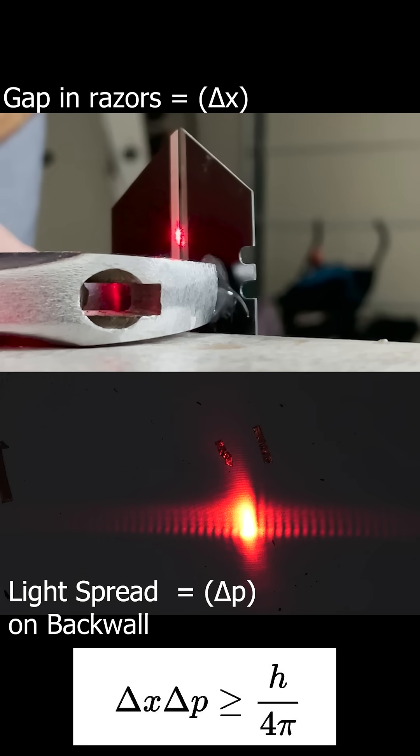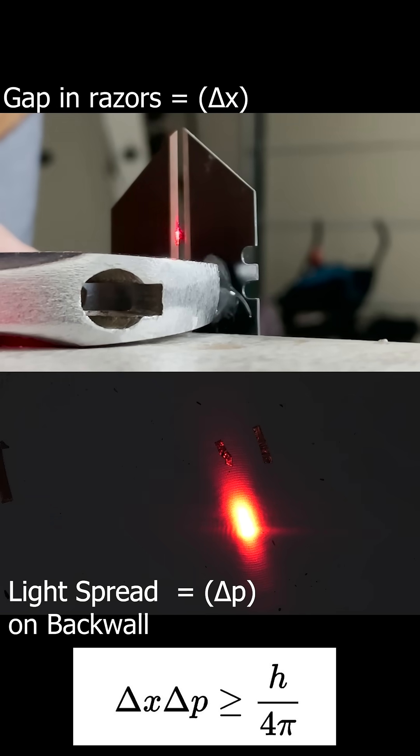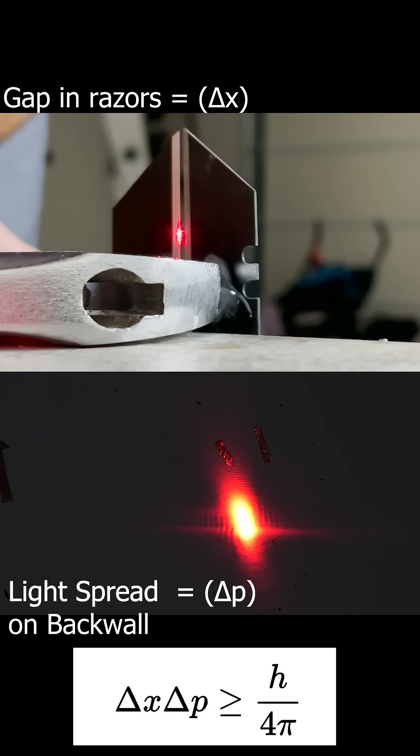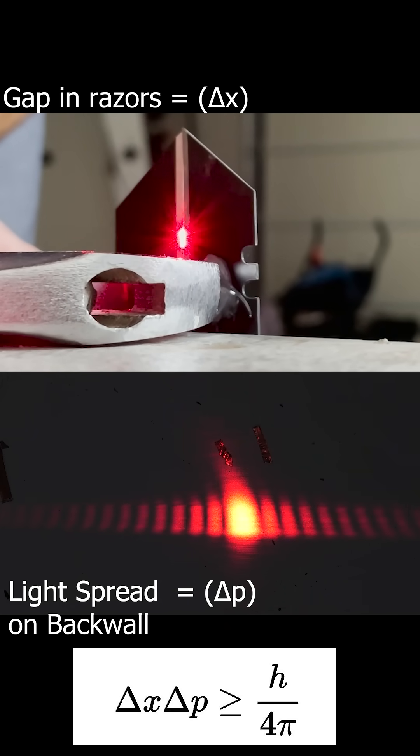So in this setup, the variability that's possible for the photons is controlled by the gap in the razor blades. If we decrease the gap, then the variability in the x-axis of the momentum must increase, which means that the photons spread out in the x-axis because they have a ton of variability in their momentum now. So the more you try to squish light, the more it spreads out.